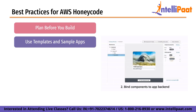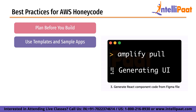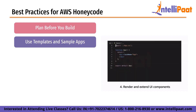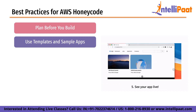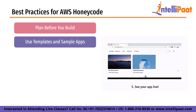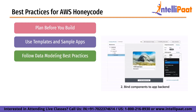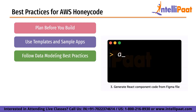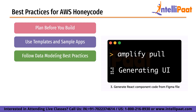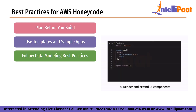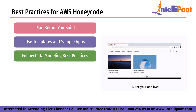Second, use templates and sample apps. Honeycode offers a range of templates and sample apps that can help you get started quickly. These templates and sample apps can provide a framework for your app and can save you time and effort. Third, follow data modeling best practices. Data modeling is a critical aspect of app development in Honeycode, and it is important to follow best practices to ensure that the data model is well designed and efficient. Best practices for data modeling include defining clear relationships between tables, avoiding circular dependencies and minimizing data redundancy.